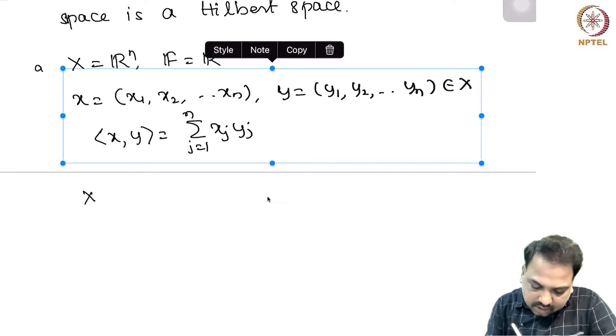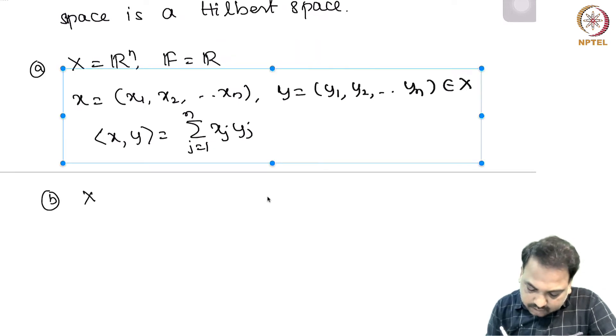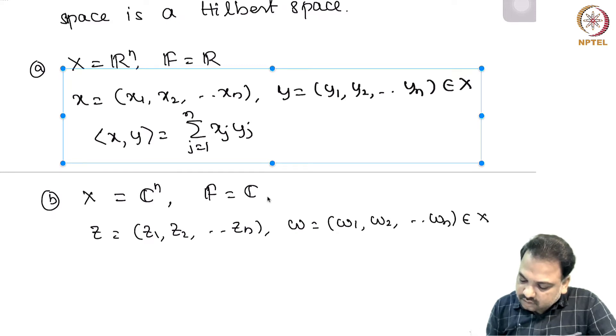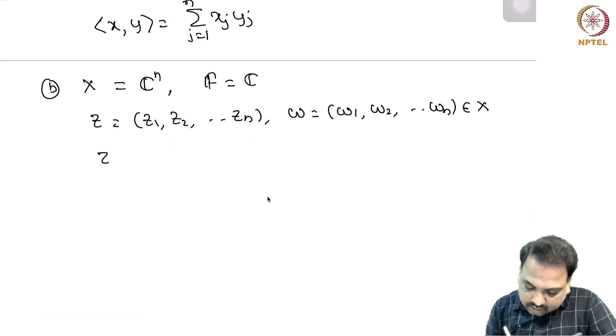Similarly, when you take X to be C^n and the field is C, you take Z as (z_1, z_2, ..., z_n) and W as (w_1, w_2, ..., w_n) coming from X. So we know the inner product of Z with W is defined as summation j equals 1 to n z_j w_j bar.